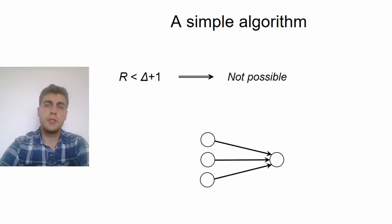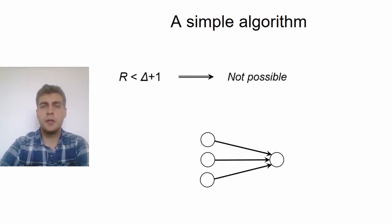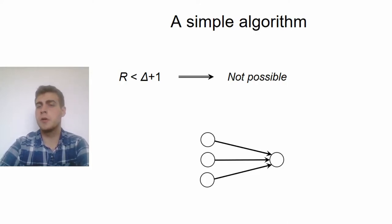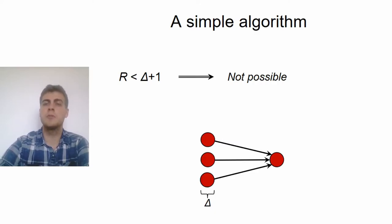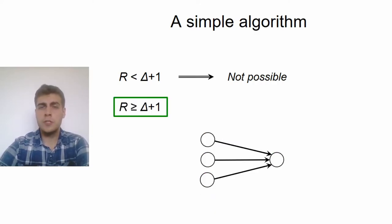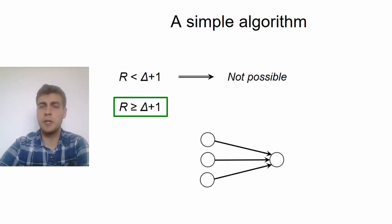So, let's look at some basic properties of this pebbling problem. First of all, if we denote the maximum in-degree in the DAG by delta, then we can note that if r is less than delta plus 1, then such a pebbling is not possible at all. Simply because when computing the max-degree node, you need one red pebble on the actual node and delta red pebbles on its inputs. So, from now on, we always assume that r is at least delta plus 1, and actually this is a sufficient condition to always have a pebbling.